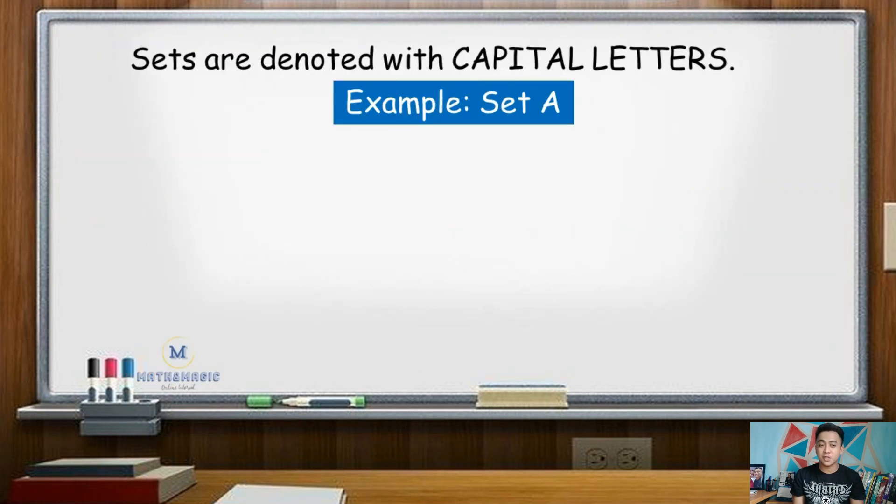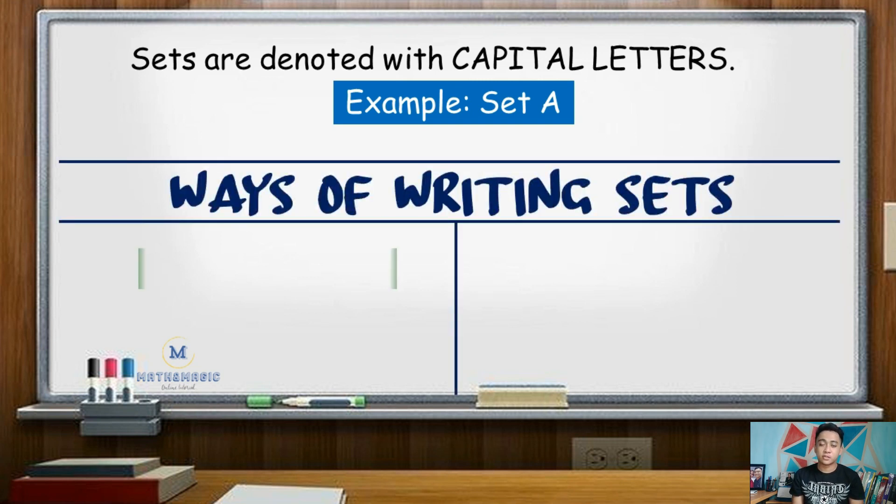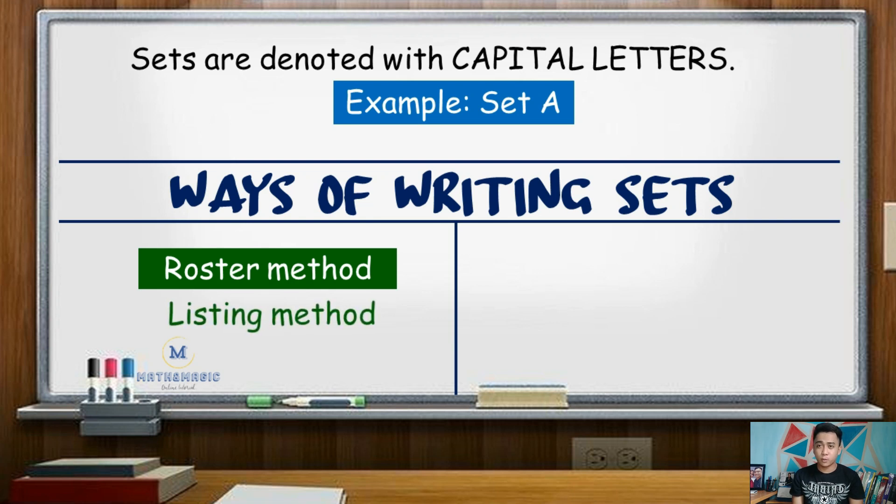Now, sets are conventionally denoted with capital letters and can be written in two ways. One is roster method, also known as listing method, and the other one which is rule method or set builder notation.